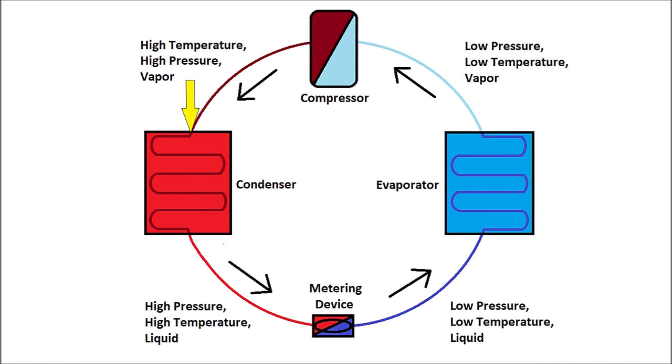And then you have the refrigerant entering the condenser, and this is where you have a phase change, otherwise known as a saturated state. Now the refrigerant is going to be able to reject heat because of the change in state. Then it comes out as a high pressure, high temperature liquid.